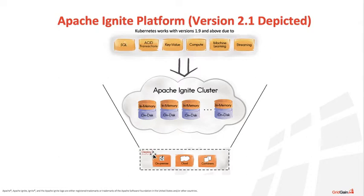At the bottom of this slide you can see there are many deployment options: on-prem, in the cloud, and containers. We're going to dig into containerization, working with the cloud, and how that can be helpful. On-prem is also an option even when using Kubernetes. Also note that Kubernetes is only going to work for those using Apache Ignite version 1.9 and above.